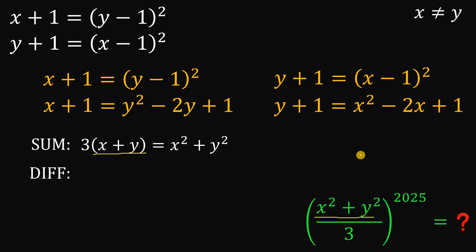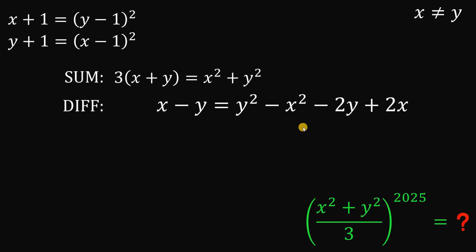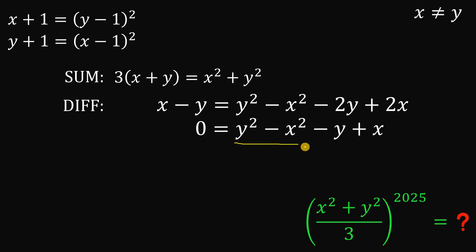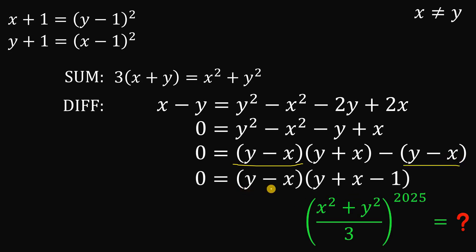Now let's look at the difference of the two equations. We get x minus y equals y squared minus x squared plus 2x minus 2y, and the constants cancel. Combining like terms, we have y squared minus x squared minus y plus x. We factor y squared minus x squared as the difference of two squares: y minus x times y plus x. Then factoring out negative 1 from the remaining terms gives negative of y minus x. With the common factor y minus x, we factor to get y minus x times x plus y minus 1 equals 0.